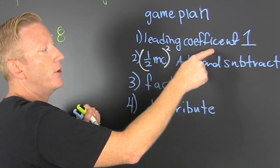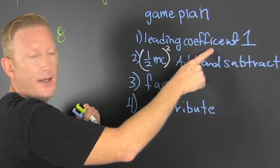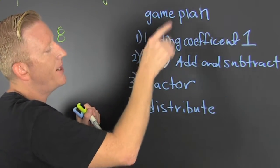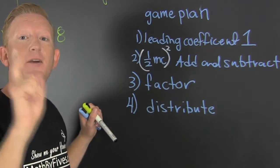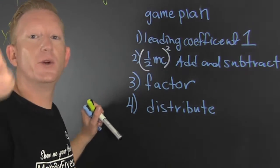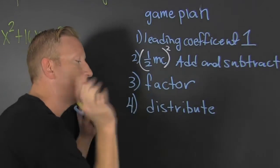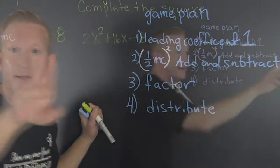We need to make the leading coefficient one. Then you take half the middle coefficient squared and you add and subtract it. Why? Because that completes you. We're completing the square. Then you factor and distribute back in.